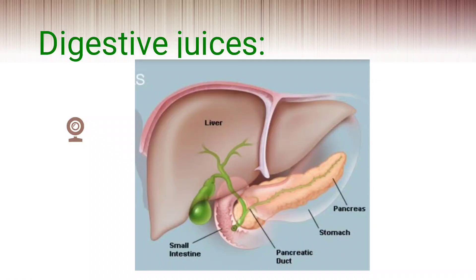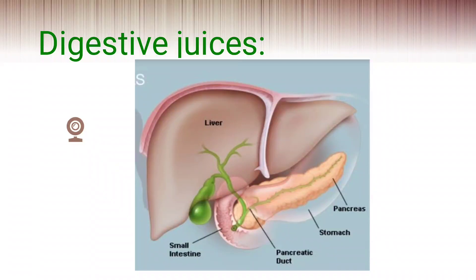Now let's look at the digestive juices. Liver is the largest gland in the body, present on the right side of the upper abdomen, and is deep red in color. Liver is also called the graveyard of red blood cells, because red blood cells die and come to the liver every 150 days. Liver secretes a juice called bile juice, which converts fats into small fat globules. Bile juice is produced by the liver but temporarily stored in the gallbladder — the green-colored structure visible in the diagram.